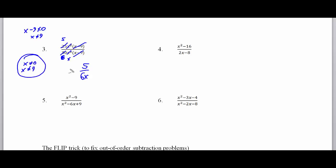An interesting point: the x minus 9 was simplified out of the problem, and if you plug 9 into the final answer you wouldn't get a division by zero error — but since that binomial was there at the start, you can't actually have x equal to 9. That's why you must identify excluded values at the beginning, before simplifying.